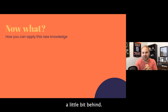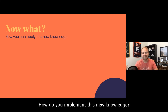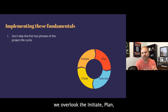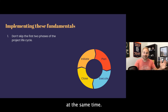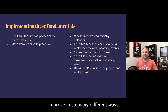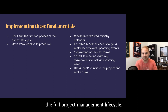So how do you implement this? I've spent the last 40 minutes talking about what project management looks like for church communications — now how do you implement it? First: don't skip the first two phases of the project life cycle. Most church communicators — myself included — overlook the initiate and plan phases, and often the close phase too, jumping straight to execution. When you initiate the full project management life cycle, it's going to help you improve in so many different ways.